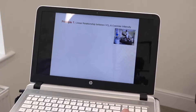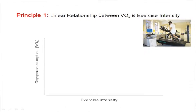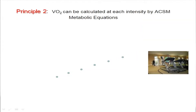Principle 1: there is a linear relationship between oxygen uptake and exercise intensity. As we can see on the graph, with exercise intensity along the bottom and oxygen uptake on the y-axis, if at each level we spend 2-3 minutes, giving time for oxygen uptake and heart rate to increase, then there is a linear relationship. We can plot the line and estimate the oxygen cost using the ACSM metabolic equations.